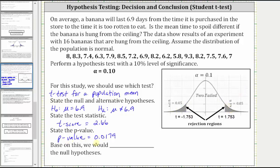Let's also compare the p-value to alpha. Again, the p-value is 0.0179, and alpha is 0.10. Notice how the p-value is small compared to the alpha.